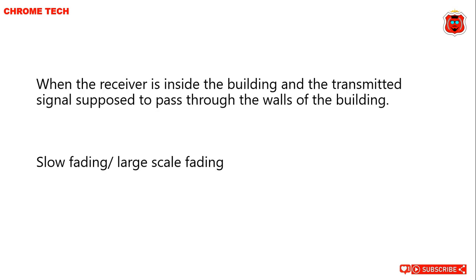When the receiver is inside the building and the transmitter signal is supposed to pass through the wall of the building — Slow Fading and Large Scale Fading both are the answer.